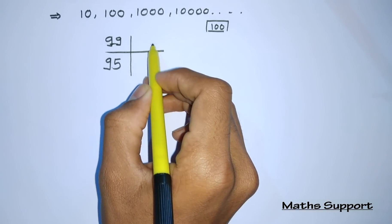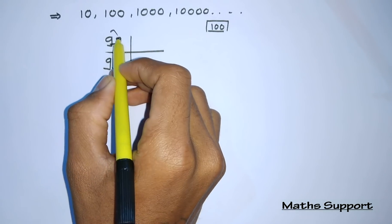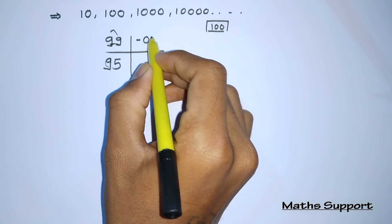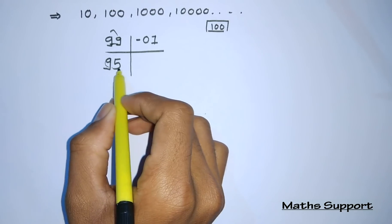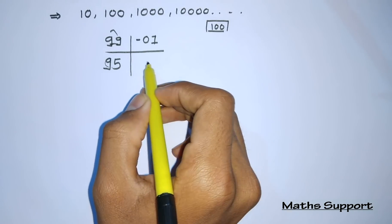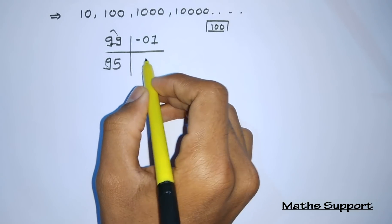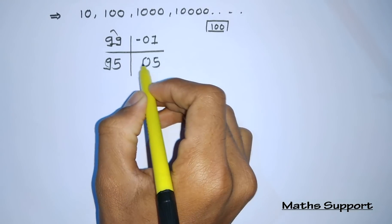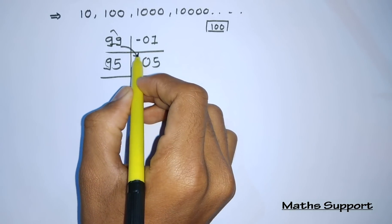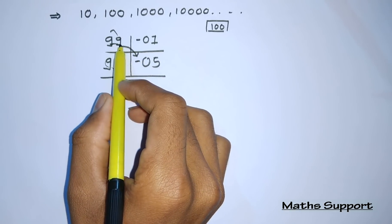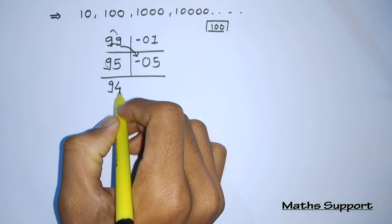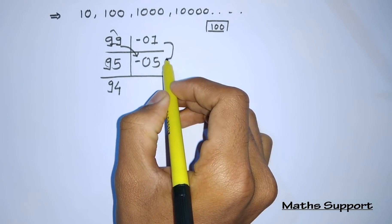Since this is a 2-digit base, we write minus 01. Now 95 is 5 less than 100, so we write minus 05 in 2 digits. Now we will add this in cross. So 99 minus 5 gives us 94.